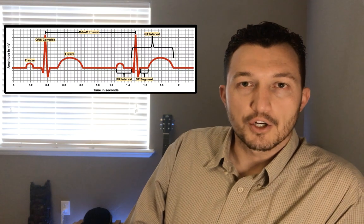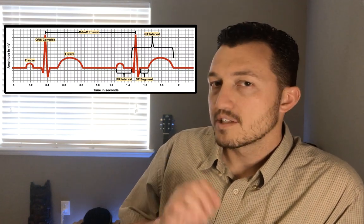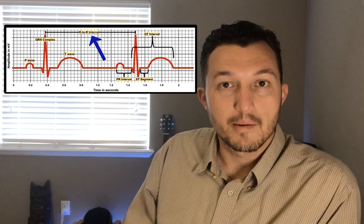Remember this image from an earlier episode? We're going to be applying this concept of the R-to-R interval quite a bit today. By the end of this episode, you're going to have all the skills and knowledge you need to interpret an EKG and identify the basic arrhythmias. We're going to talk about regularity and rate. Let's get started with regularity first.